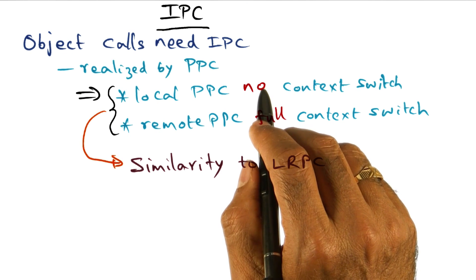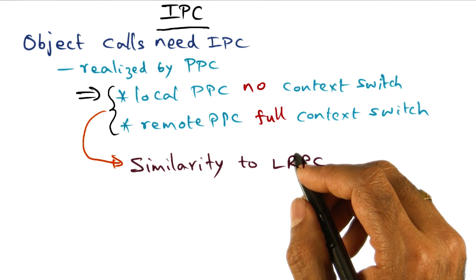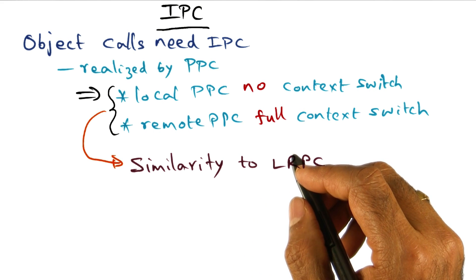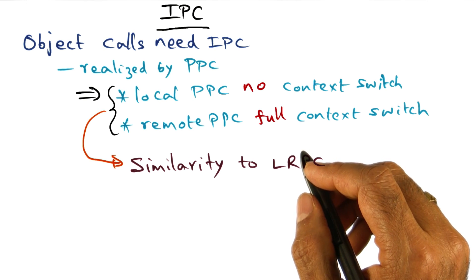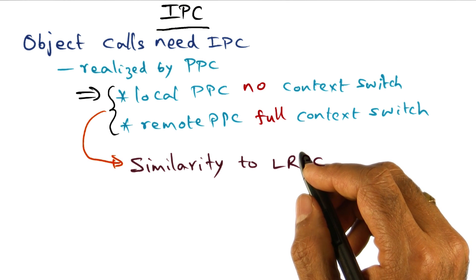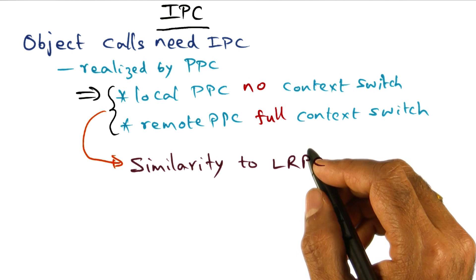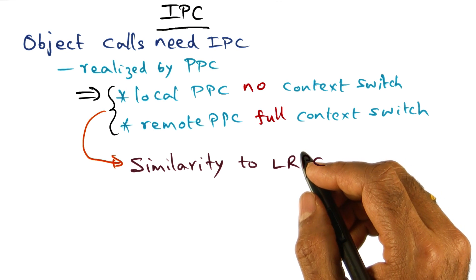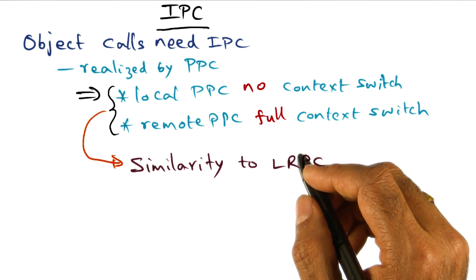All of this management of replicas happens under the cover in software. The key thing to notice is that we are not relying on hardware cache coherence, because hardware cache coherence only works on physical memory. When you replicate an object, the physical memory locations are no longer the same — the replica is known only to the system software. So the management of that replica has to be handled by the operating system.